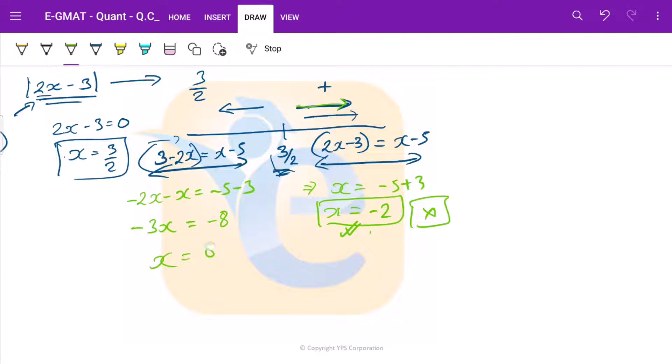So x = 8/3. Now 8/3 is 2 point something. Now 2.xx is greater than 1.5. This would lie somewhere on this side of the number line, greater than 3/2 here. So again our assumption was that x is less than 3/2 but the value comes on this side. So again this is also not the solution.